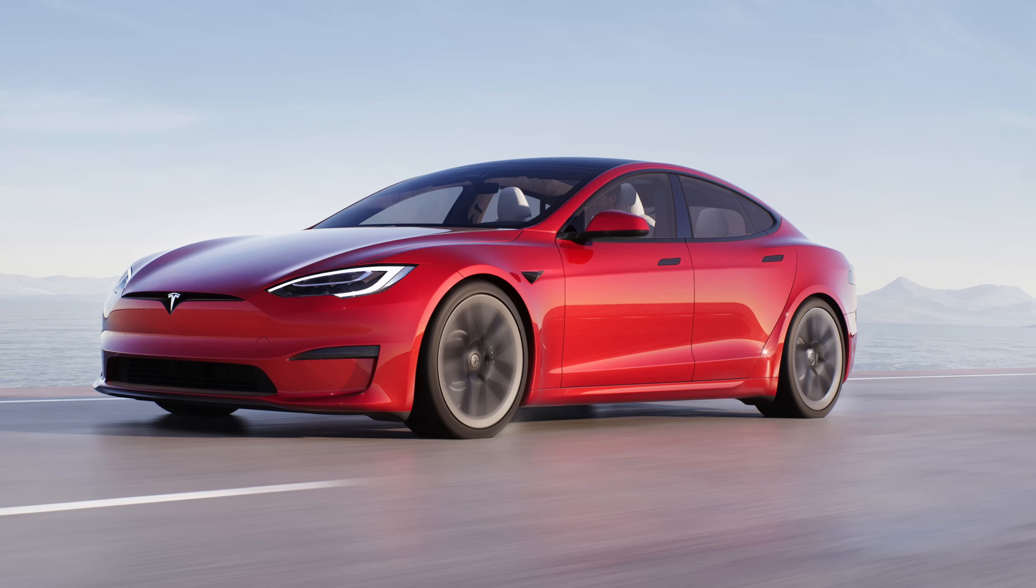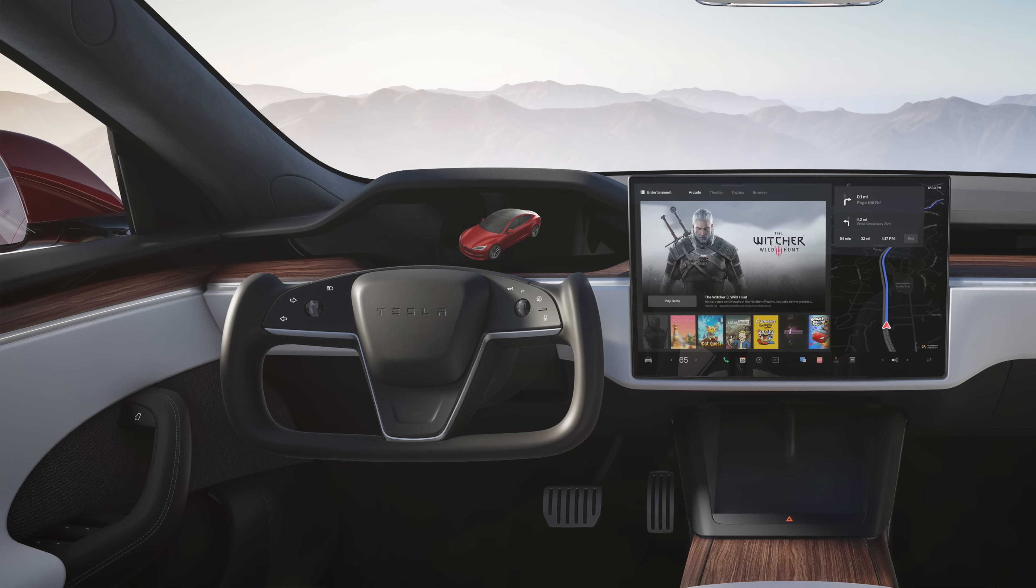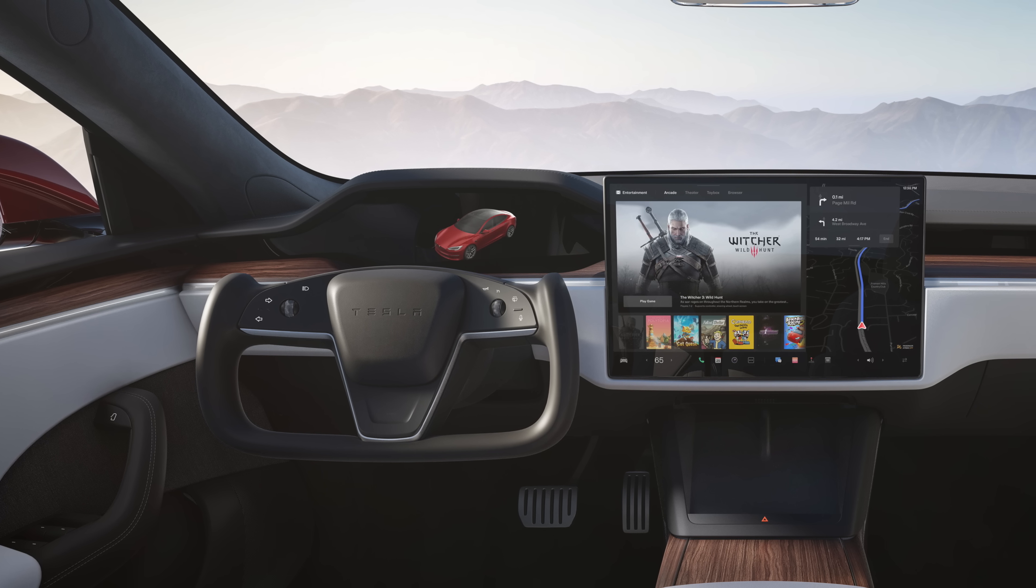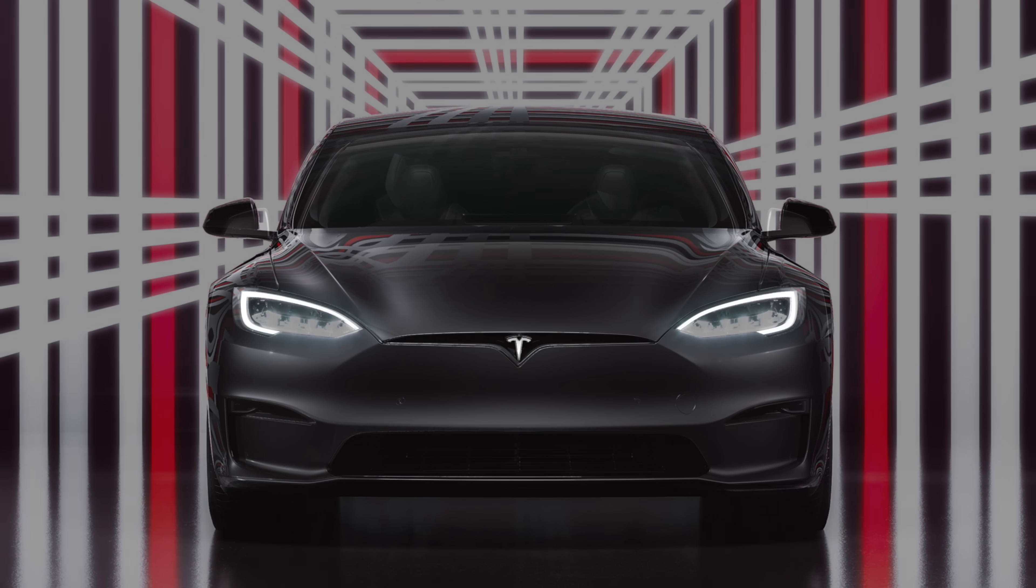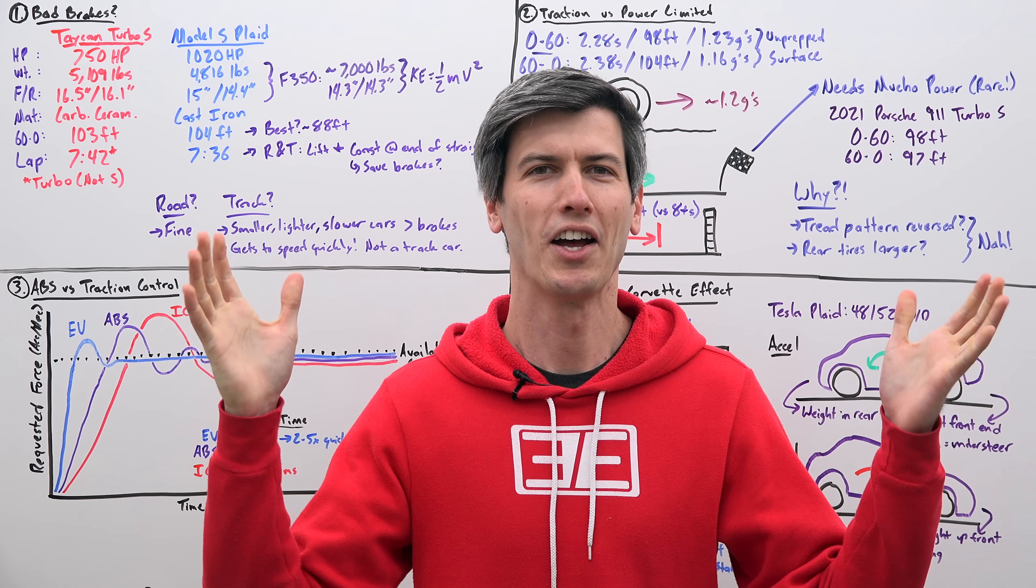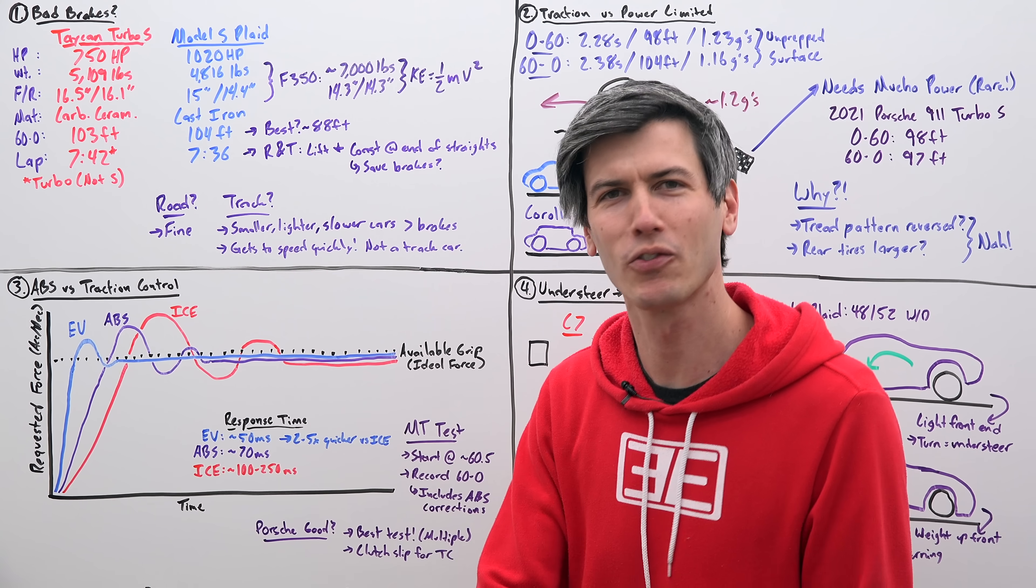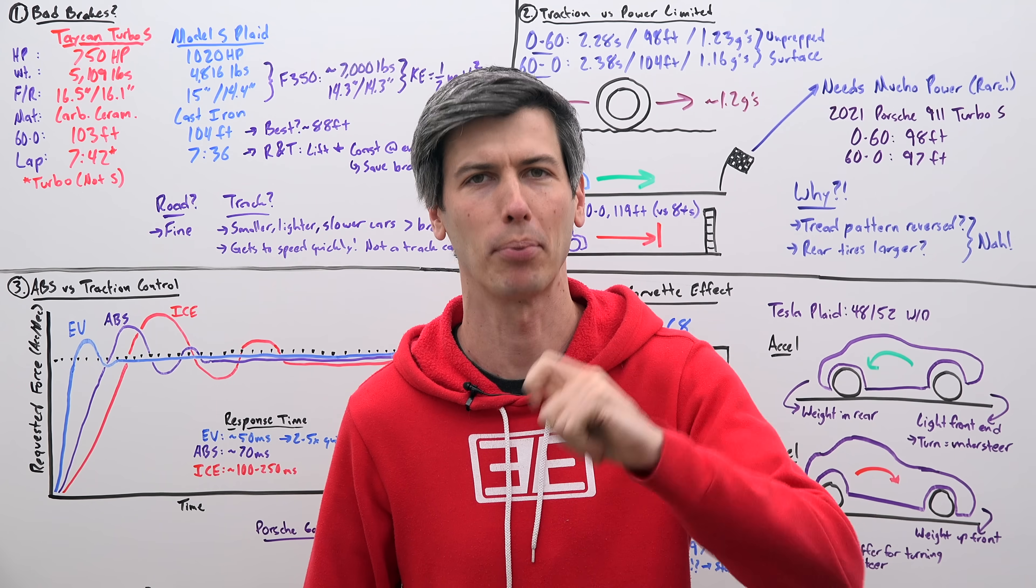The Tesla Model S Plaid is the first and only production car I've ever seen that accelerates better than it decelerates. In other words, when you hit the go pedal it goes forward very quickly, but when you hit those brakes it's not quite the same. Hello everyone and welcome, in this video we're talking about whether or not the Tesla Model S Plaid has crap brakes.